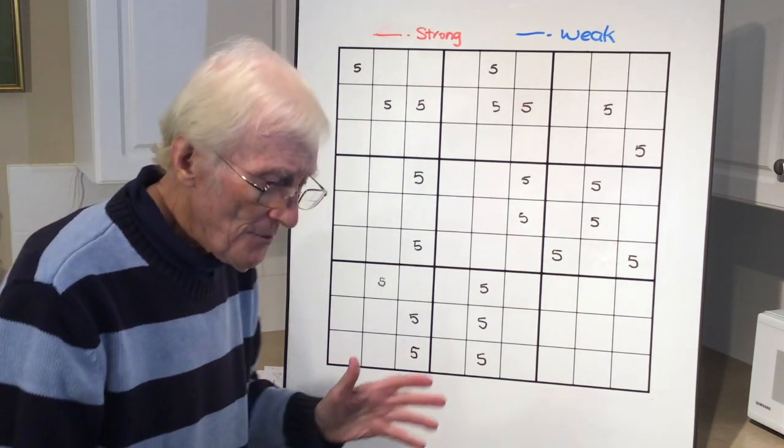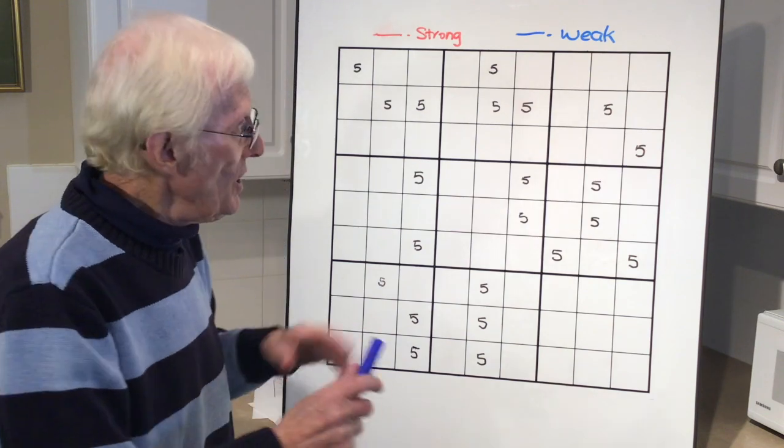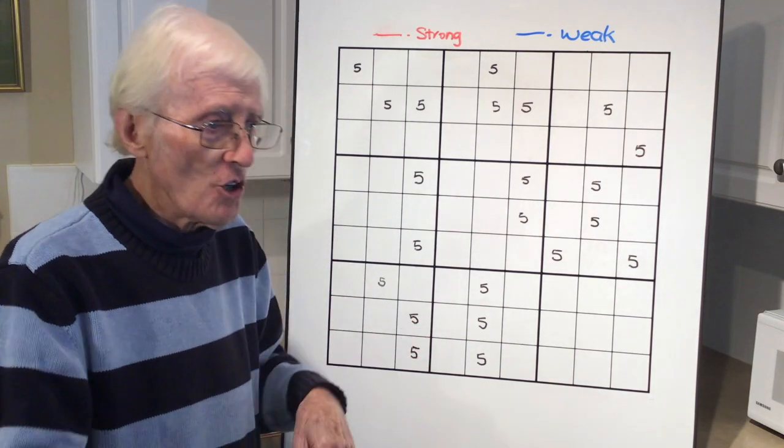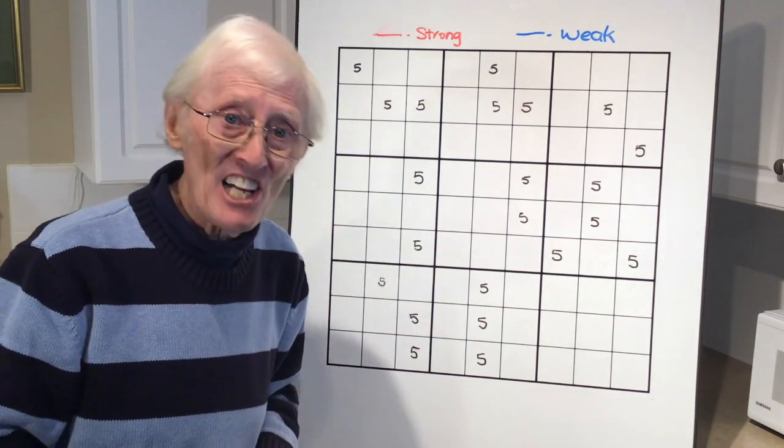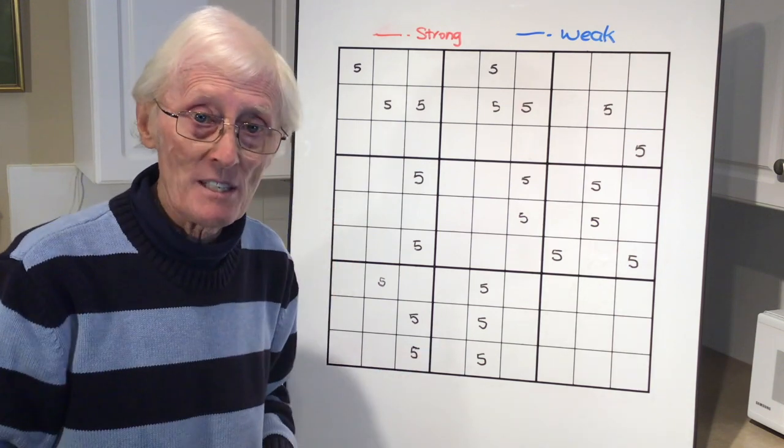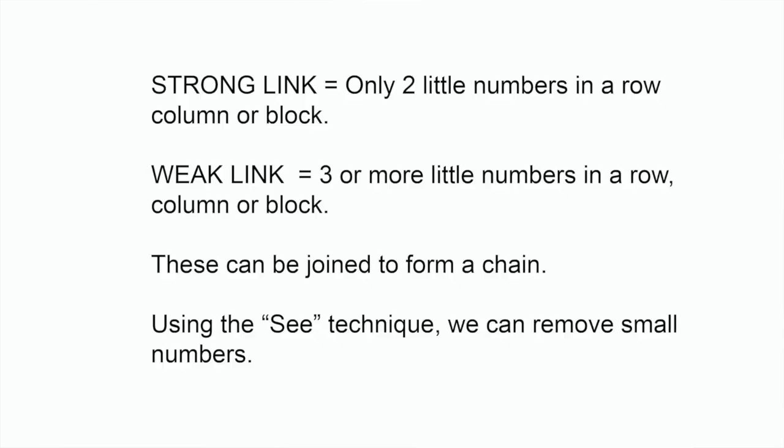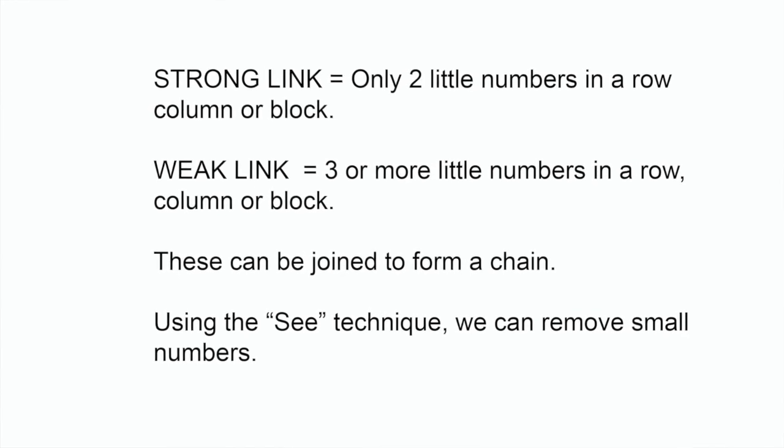Now, I'm going to give you a definition of a strong link and a weak link. Firstly, a strong link: only two little numbers in a row, a column or block. A weak link: three or more little numbers in a row, column or block.